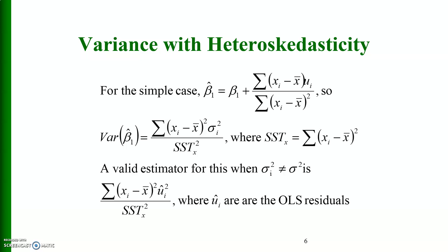The variance with heteroscedasticity: if the variance of the error term is heteroscedastic, then beta 1 hat is equal to beta 1 plus summation of (x_i minus x-bar) times u_i divided by summation (x_i minus x-bar) squared. The variance is sigma_i squared divided by total sum of squares, where SST equals summation (x_i minus x-bar) squared. A valid estimator when sigma_i squared is not constant is summation (x_i minus x-bar) squared times u_i-hat squared divided by SST squared, where u_i-hat are the OLS residuals.